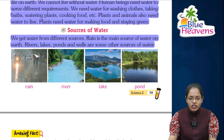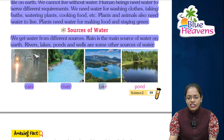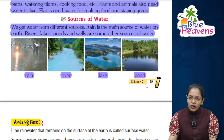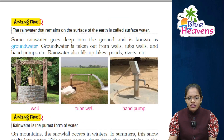Now look at the images. Rain — barish, river — nadi, lake — jheel, pond — talab. These are all our water bodies and water sources.